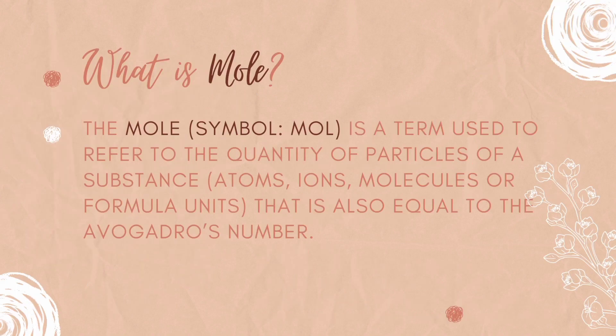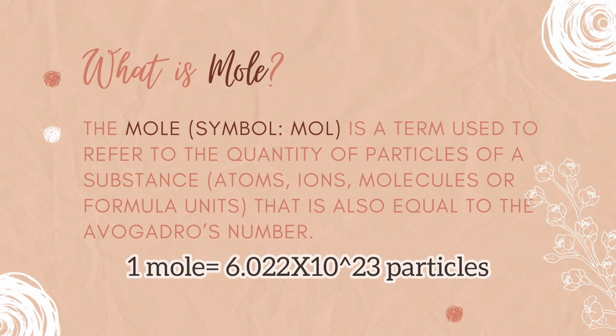Next, we have the mole. A mole is a term used to refer to the quantity of particles of a substance — either atoms, ions, molecules, or formula units — that is equal to Avogadro's number. The mole is the basic unit of quantity of an element or compound. Take note that one mole of any element or compound is equal to Avogadro's number.